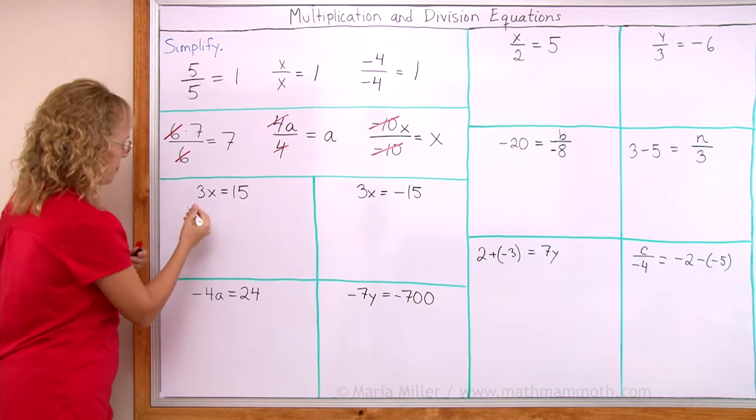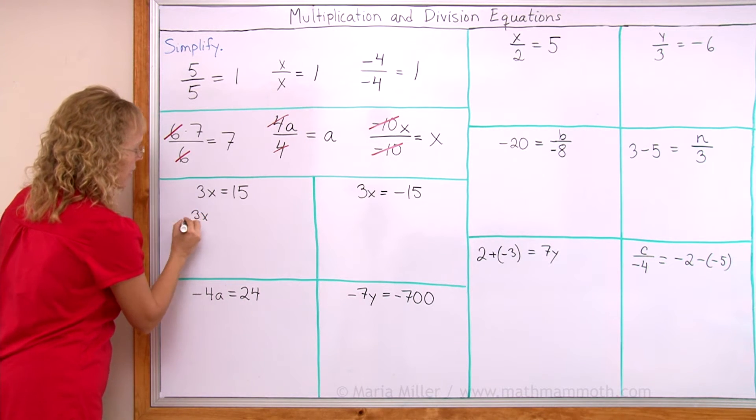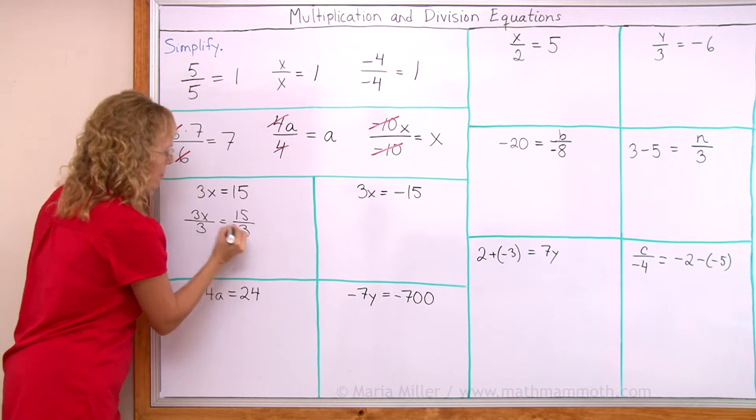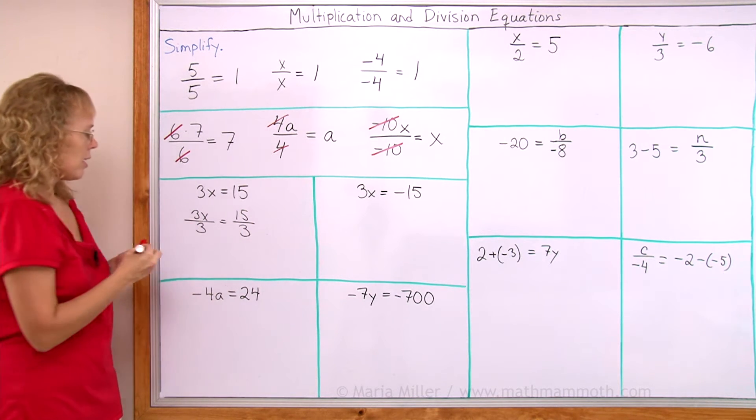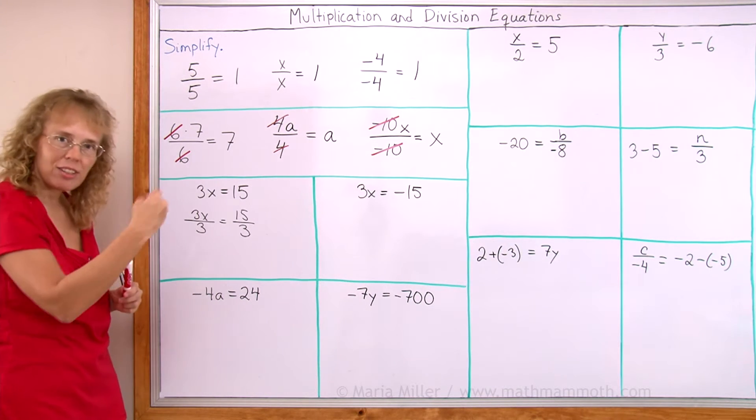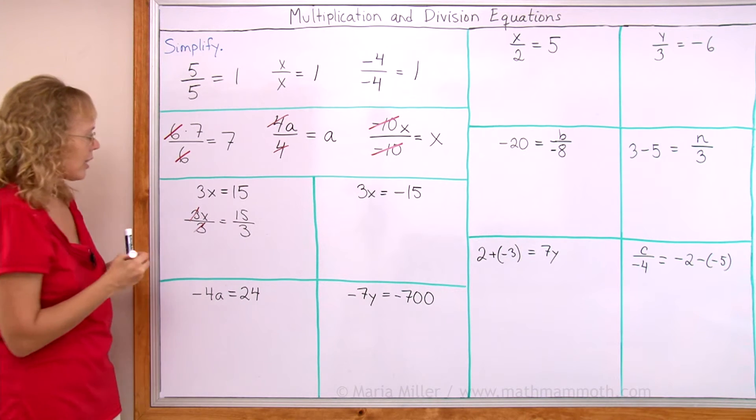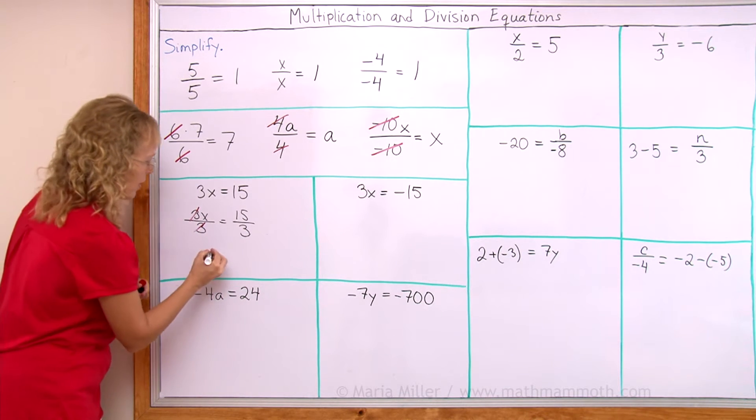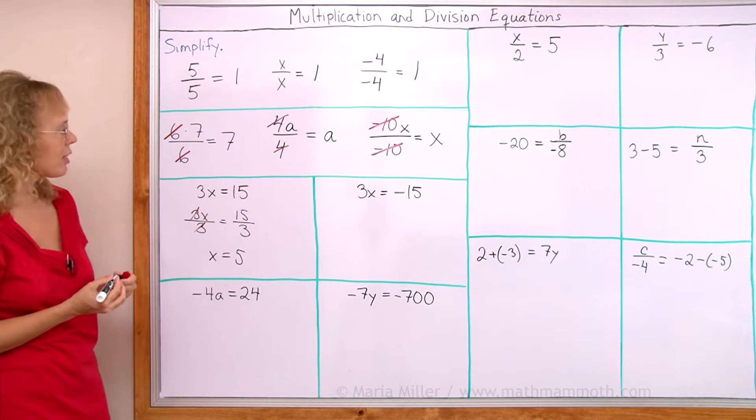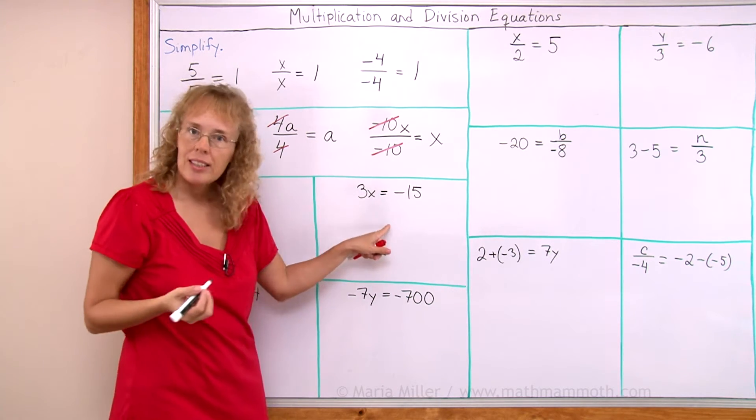And we get 3x gets divided by 3. And 15 gets divided by 3. And now, as you can see here, the 3s will cancel out. Okay? Because it's 3 divided by 3. And that leaves x alone. x equals 5. Here we calculate 15 divided by 3.